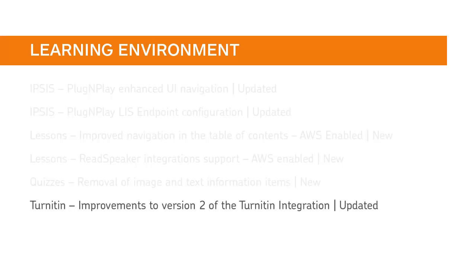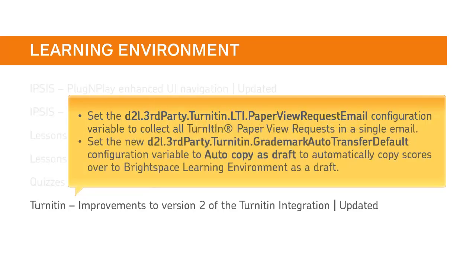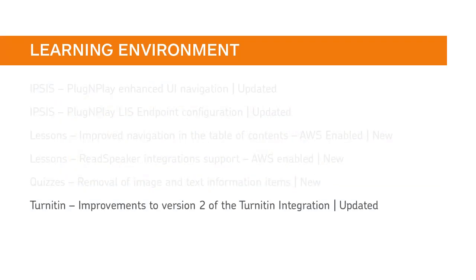You will notice a number of improvements to the Turnitin version 2 integration. Set the D2L third-party Turnitin LTI pay-per-view request email configuration variable to collect all Turnitin pay-per-view requests in a single email. Set the new D2L third-party Turnitin grade mark auto-transfer default configuration variable to auto-copy as draft to automatically copy scores over to Brightspace Learning Environment as a draft. All other functionality is automatically enabled for Turnitin version 2 users.